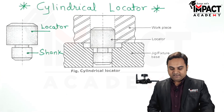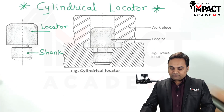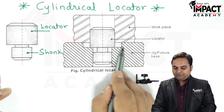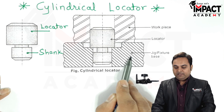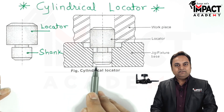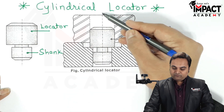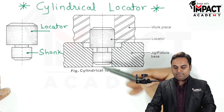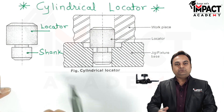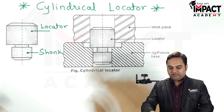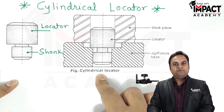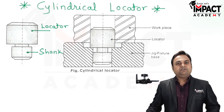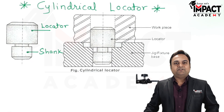The cylindrical locator is used to locate the workpiece so that we get a proper relationship between the workpiece and the jig or fixture body, and it is properly aligned. However, there may be some rotation about the axis of the locator — the workpiece may try to tilt or rotate about this axis. In order to avoid this rotation, we need to additionally constrain the workpiece.